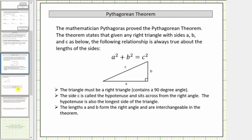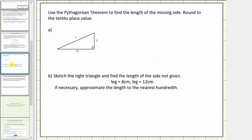Let's look at some examples. We're asked to use the Pythagorean Theorem to find the length of the missing side and round to the tenths place value. Notice right away the side opposite the right angle is the hypotenuse and it's already labeled c correctly. So now we can label the two legs a and b — it does not matter which leg is a and which leg is b. So let's call this leg a and this leg b. Now we'll use the Pythagorean Theorem to determine the length of the hypotenuse.